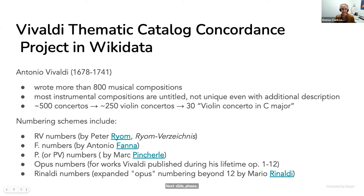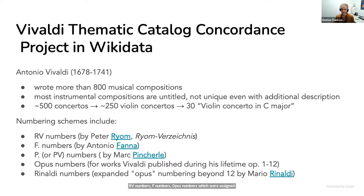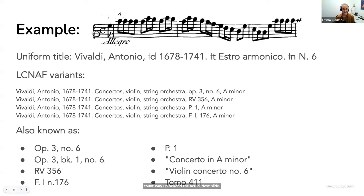Vivaldi is a Baroque-era composer who wrote over 800 compositions, most of them instrumental and in common forms like sonatas and concertos. Very few were originally published with any kind of title, so it's hard to identify them even with metadata like instrumentation and key. Of his 500 concertos, half are violin concertos, and 30 of them are violin concertos in C major. So there's really no unique description of the work without relying on catalogue codes, which include RV numbers, F numbers, P numbers, Opus numbers (assigned to the few works published during Vivaldi's lifetime), and Rinaldi numbers. As an example, this work is from a set of concertos that does have a title, L'Estro Armonico, and each of the thematic catalogs has assigned a different number to this work, so it's known by all these different identifiers. If you're cataloging a score or sound recording, you could find any combination of these on the item.